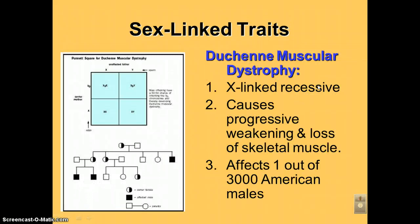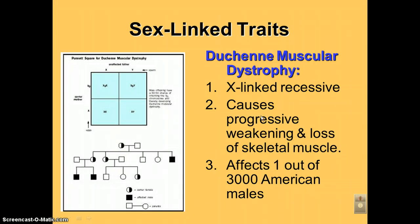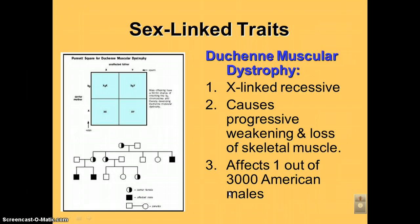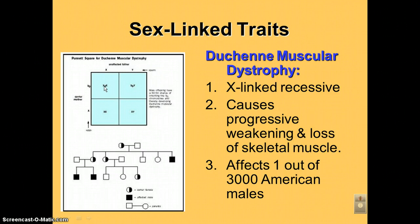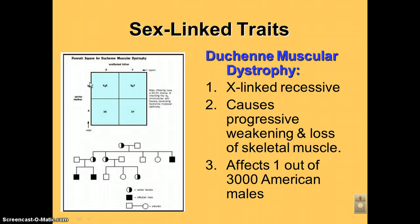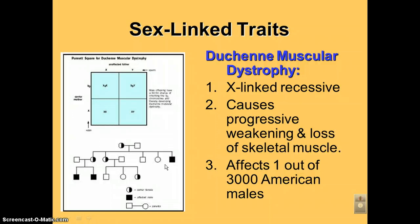Duchenne's muscular dystrophy is also X-linked recessive. Dystrophy means it's going to stop working, so basically your muscles will eventually stop working — it causes a progressive weakening and loss of skeletal muscle, affecting 1 out of 3,000 American males. In this example they used subscripts, which is uncommon; the subscript that looks like a zero is actually a capital D. As with the other examples, dad is normal, half the females are carriers, and half the boys will get the disease. In a pedigree, carriers are shown half-colored in, while those with the disease are completely filled in — and notice the ones who have the disease are all males, because they only need one allele.